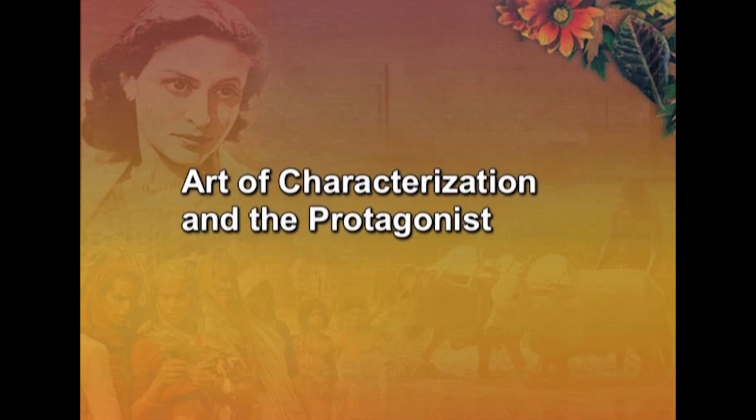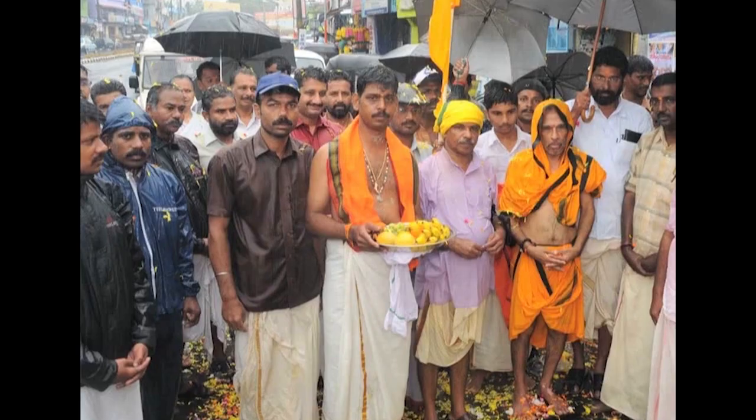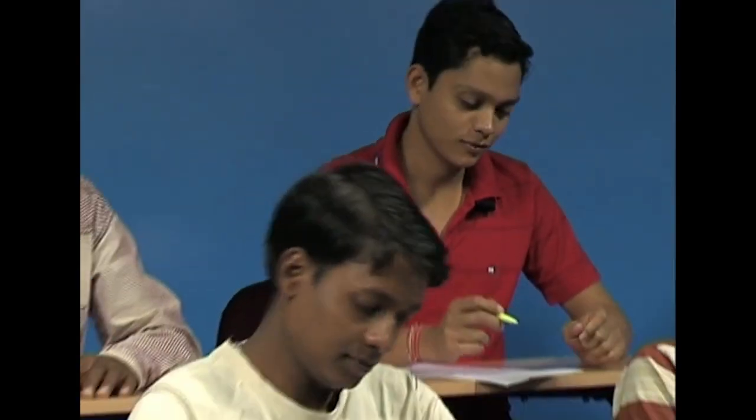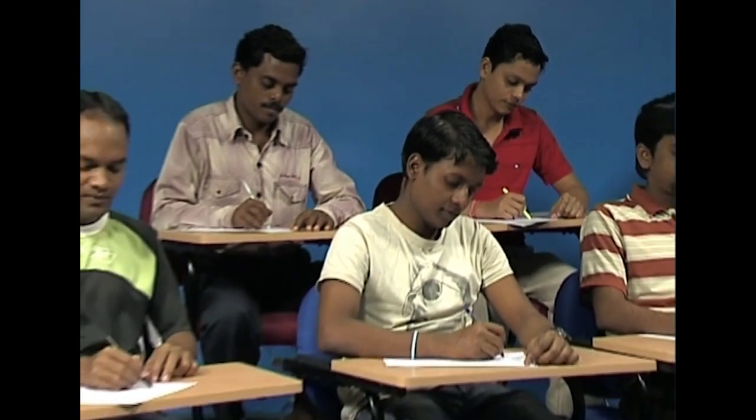First, we look into the art of characterization and the protagonist. Markandaya's art of characterization is traditional. The externals of characters are given sometimes through direct description, but more frequently through stray remarks or comments in the course of the story. As the action develops, we know about the characters from what they themselves do and say, and from what others say about them. It is in this way that Natan and Rukmani acquire larger-than-life dimensions and become symbolic of the faceless Indian peasantry suffering and oppressed.